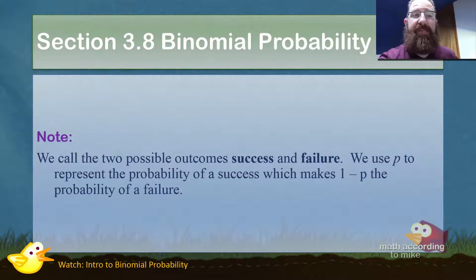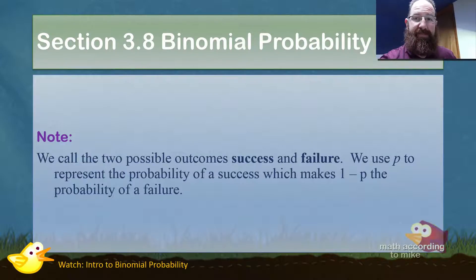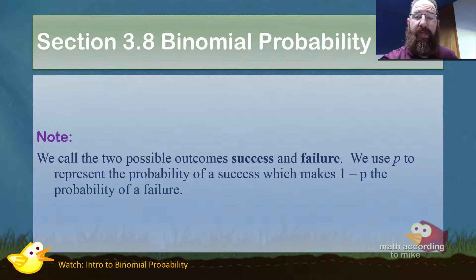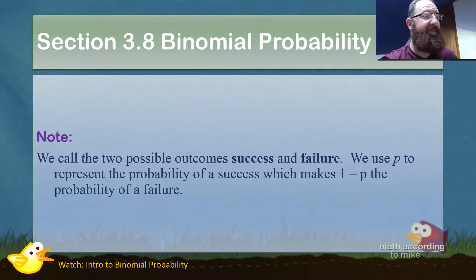There are only two possible outcomes: success and failure. We use P for the probability of success. Since there's only two options, the probability of success plus the probability of failure must equal 100%, or 1. So if we call P the probability of success, then 1 minus P is the probability of failure.